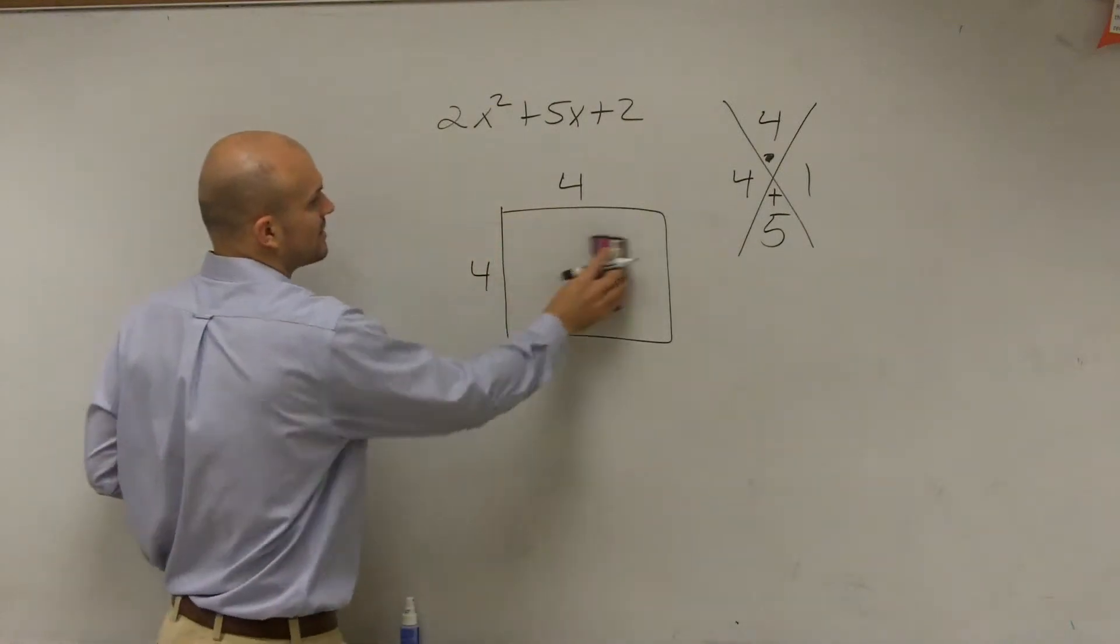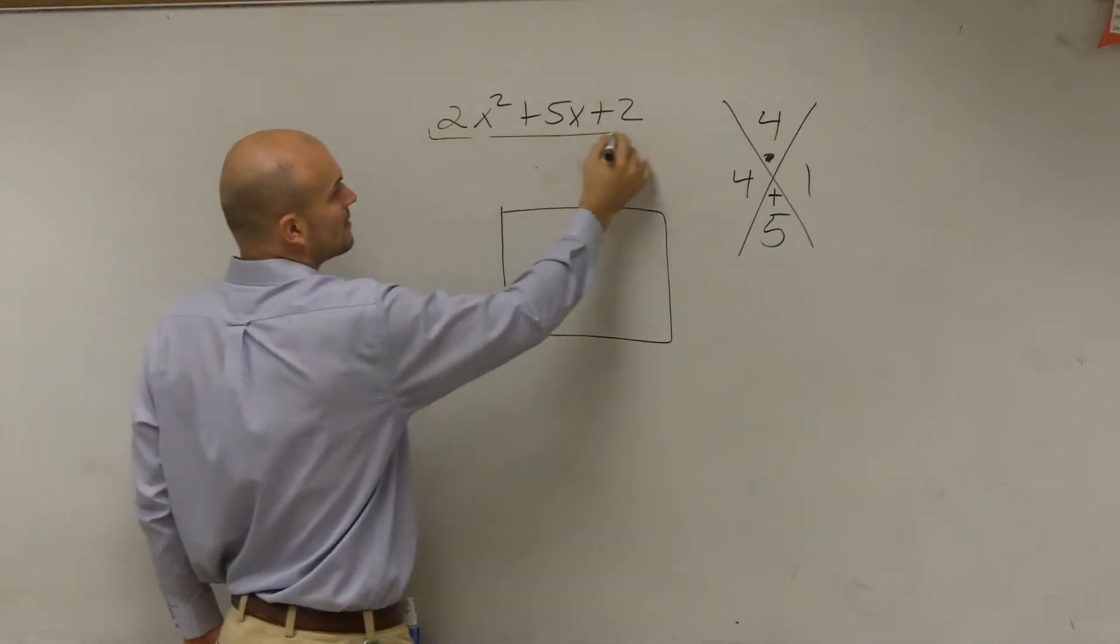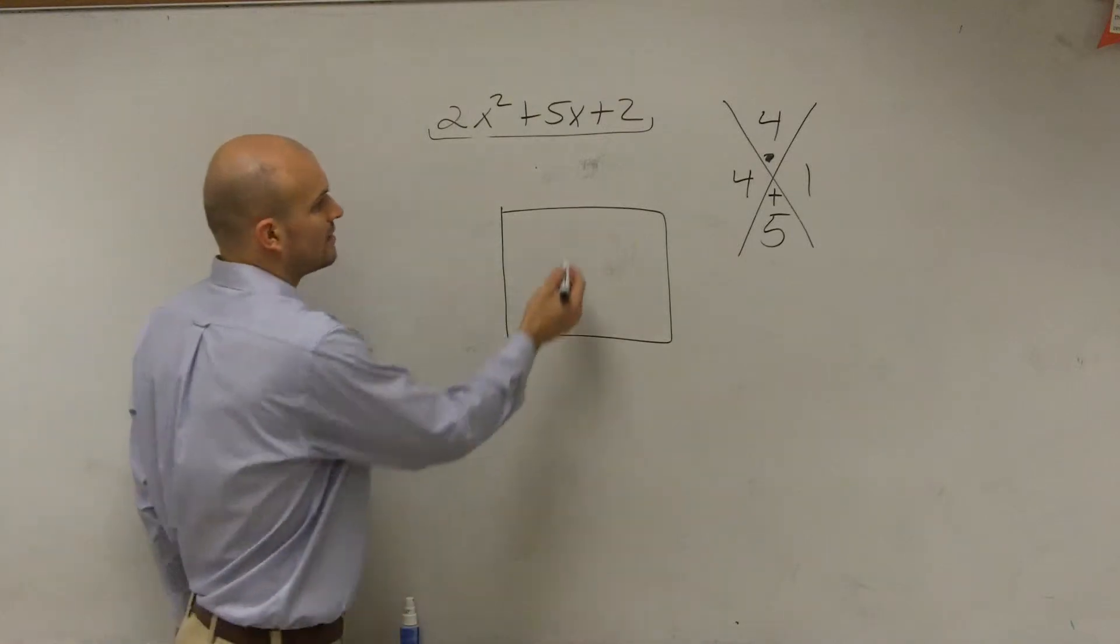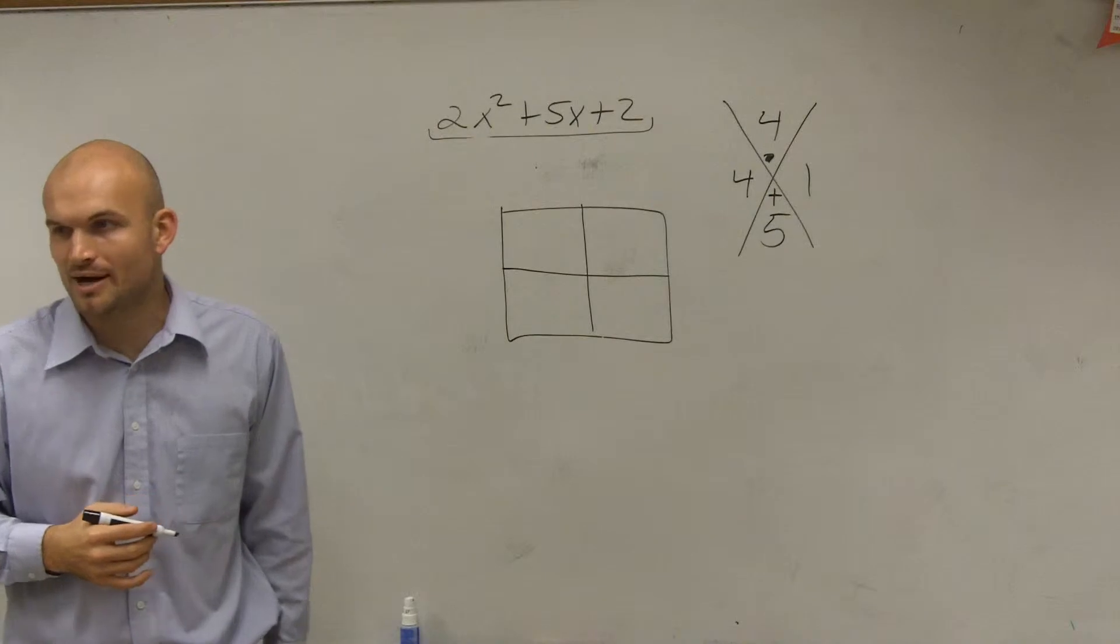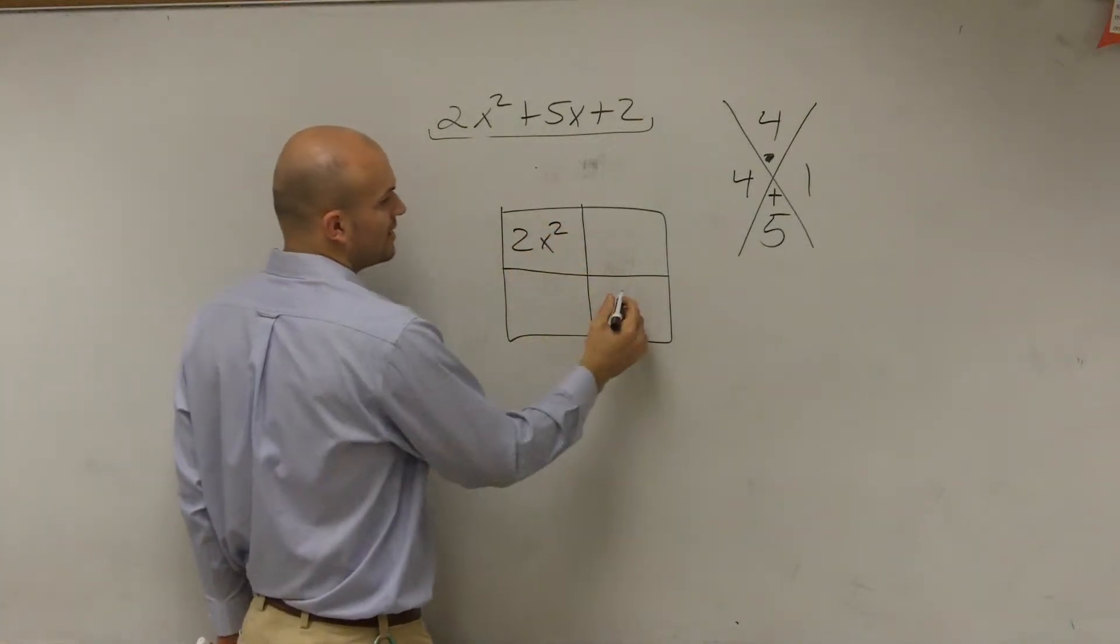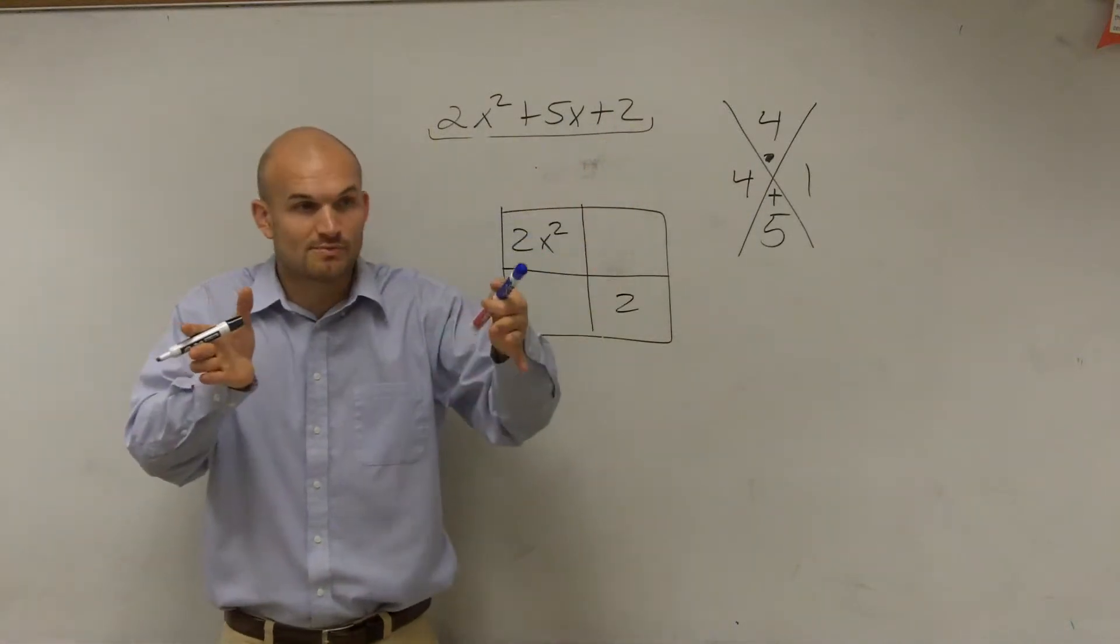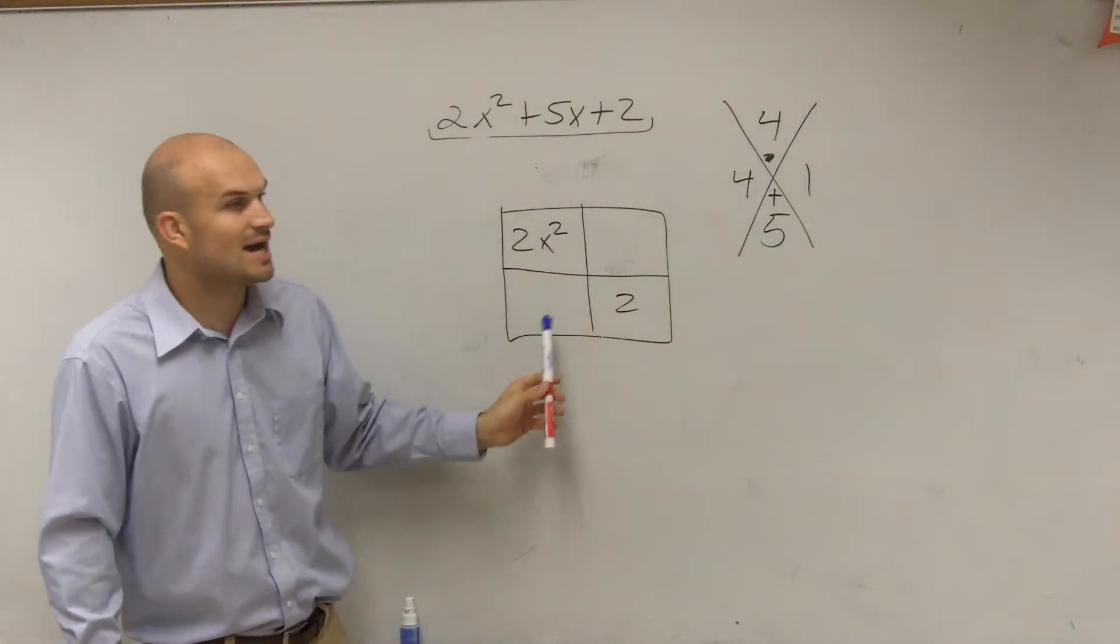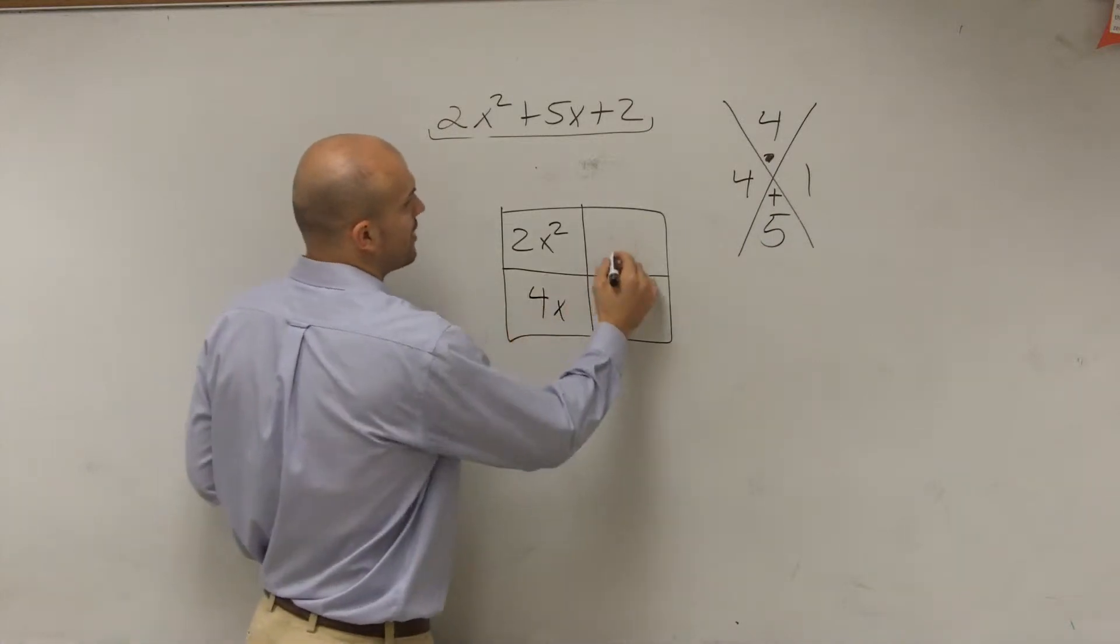So we're going to take our rectangle and say, what is the area? Well, the area is 2x² + 5x + 2. It's going to get a little difficult to put three different boxes into my rectangle. So what I could do is put my 2x² here and my 2 here. But then, like I did in the grouping method, remember when I wrote those middle terms as two different terms?